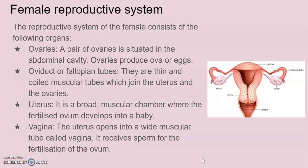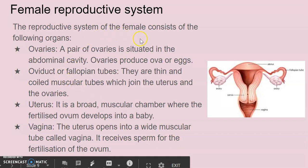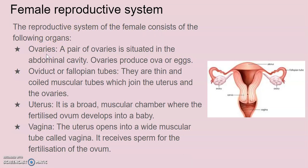Now let's study the female reproductive system. It consists of the following organs. First, ovaries — they are situated in the abdominal cavity. Ovaries produce ova, or eggs, which are female gametes that participate in reproduction. They are called ova in plural. Next are the ovary ducts, also called fallopian tubes — different names but same meaning. They are thin and coiled muscular tubes which join the uterus to the ovaries.